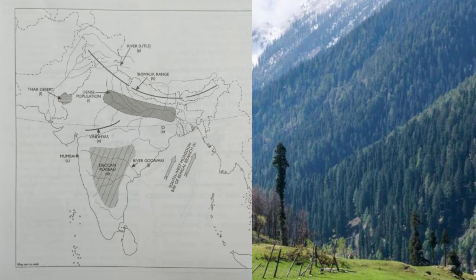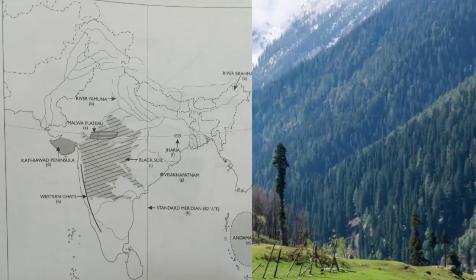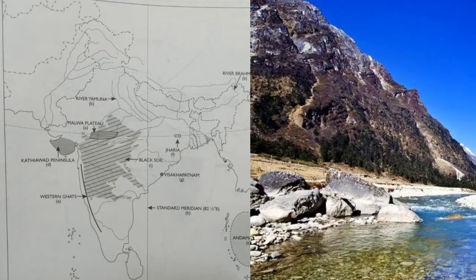Mark and name the river Godavari — draw and write the name. Next map shows outline map of the Indian subcontinent: shade over the appropriate place and name the Malwa Plateau. Trace the course of river Yamuna and river Brahmaputra.